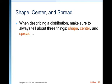Shape, center, and spread. When describing a distribution, always tell about three things: shape, center, and spread. I also want you to add outliers — values that don't fit the regular pattern. So we're going to remember shape, outliers, center, and spread. That makes the mnemonic device SOCS — S-O-C-S: shape, outliers, center, and spread.